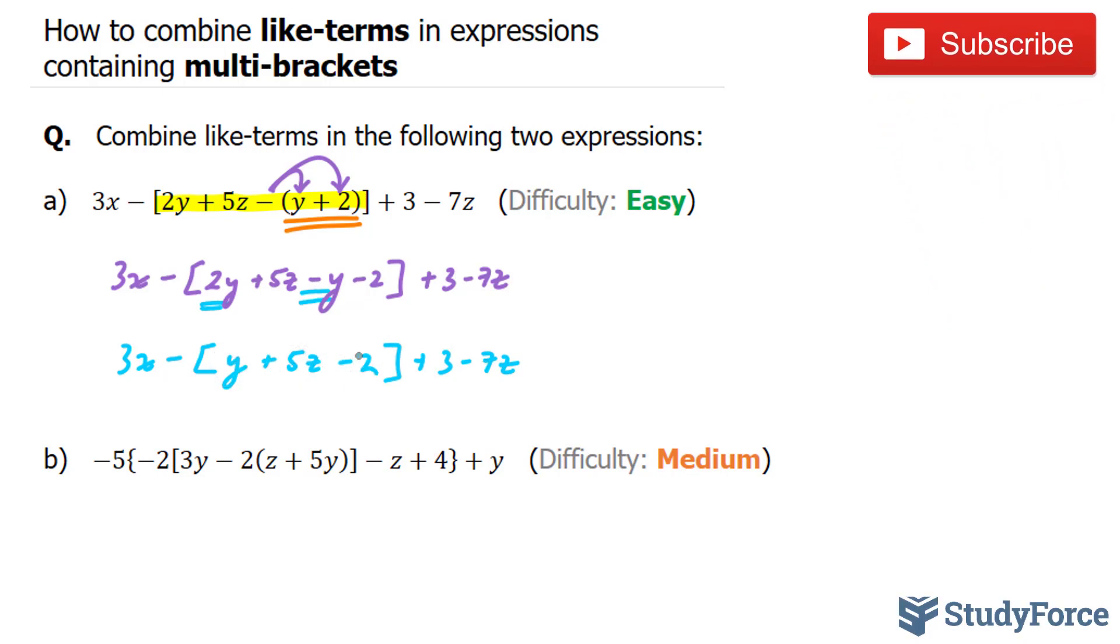These three terms cannot be combined, neither are like terms. So we have to liberate these three terms by multiplying this negative into the three terms to its right. Let's go ahead and do that.